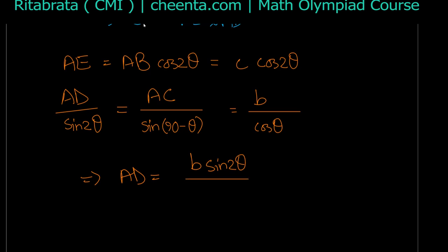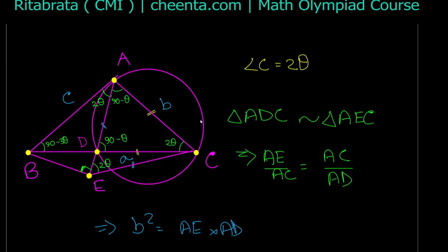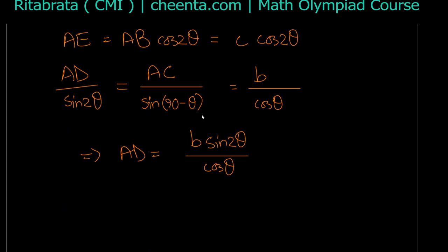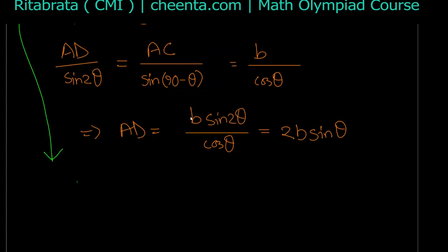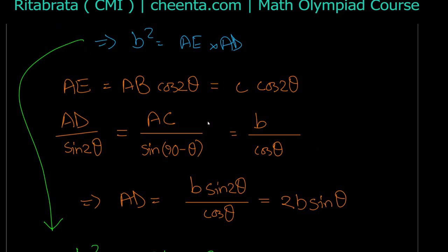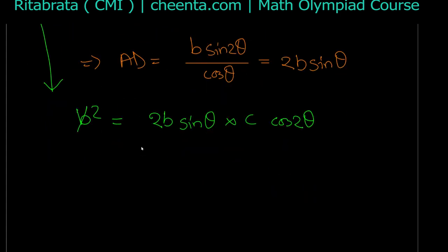We can divide by cos(θ) since θ can never be 90°: if θ were 90° then angle C = 2θ = 180°, making triangle ABC degenerate, which is not the case. Now sin(2θ) = 2 sin(θ) cos(θ), so the cos(θ) cancels and AD = 2b sin(θ). Now I substitute into b² = AE · AD: b² = (c · cos 2θ) · (2b sin θ). Cancelling one b gives b = 2c sin(θ) cos(2θ).